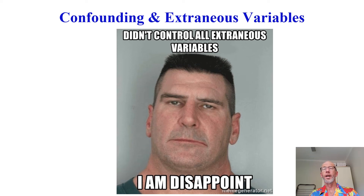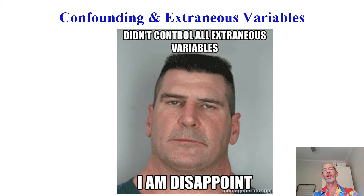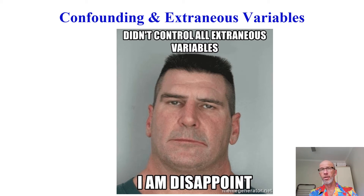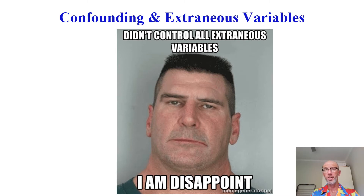In psychology, we are constantly coming up with theories. We convert these theories into testable hypotheses, and therefore we conduct experiments, we generate data, and we try to draw valid and robust conclusions. The problem is the validity of our conclusions might be impacted by the presence of extraneous and confounding variables. That's the point of this video — we're going to define what we mean by extraneous and confounding variables, point out similarities, and importantly contrast the two.